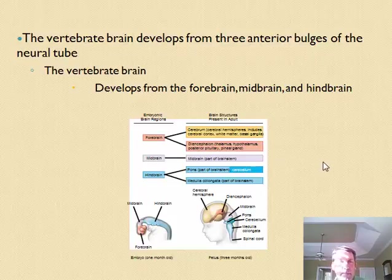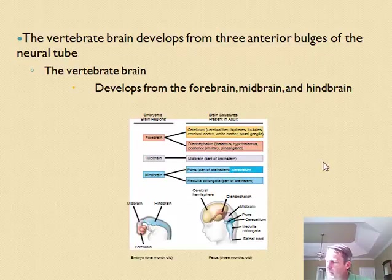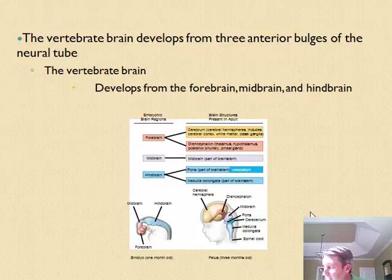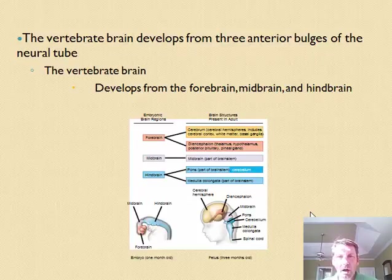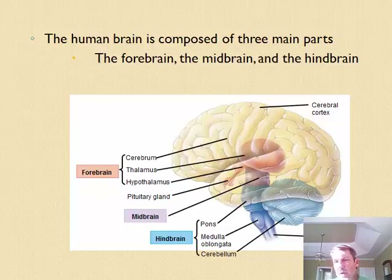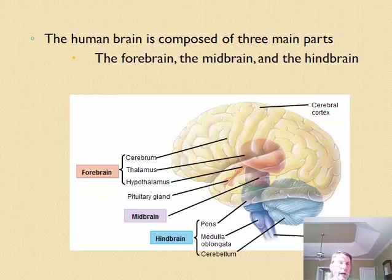The structures that develop include: the medulla, consisting of nerve tracts connecting different brain parts; the cerebellum, which coordinates muscle activity; the pons, a large structure involved in controlling breathing; the thalamus, a relay center for many messages; and the hypothalamus, which coordinates internal organs. These are all visible in a figure of the adult human brain showing forebrain, midbrain, and hindbrain.